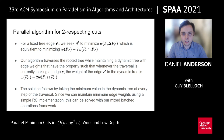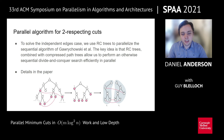To solve the other half of the two-respecting cuts problem — the independent edges case — we use a parallel version of the algorithm given by Garachowski et al. in their sequential algorithm. We show that we can use RC trees to parallelize a divide and conquer algorithm that would otherwise be sequential, and we also combine some ideas using compressed path trees to make this efficient. We omit the full details here, and you can read the paper if you want to see this case.